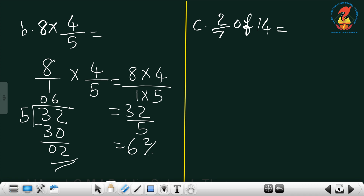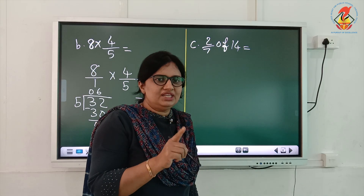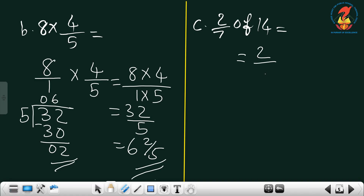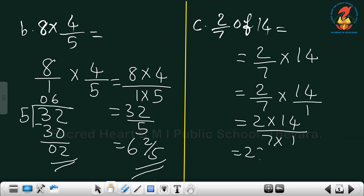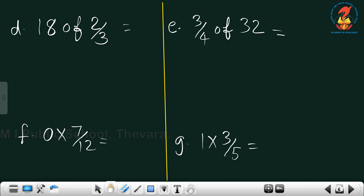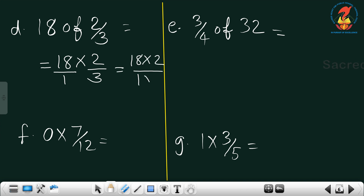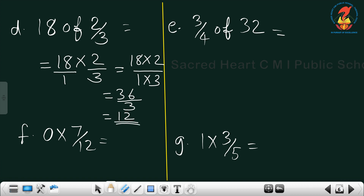The next one is 2/7 of 14. '2/7 of 14' means 2/7 × 14. Since 14 is a whole number, write it as 14/1. Then 2/7 × 14/1: multiply numerators 2 × 14 = 28, divide by 7 × 1 = 7. So 28/7 = 4. The answer is 4. Next: 18 of 2/3 means 18 × 2/3. Write 18 as 18/1: 18 × 2 divided by 1 × 3 = 36/3 = 12. The answer is 12.